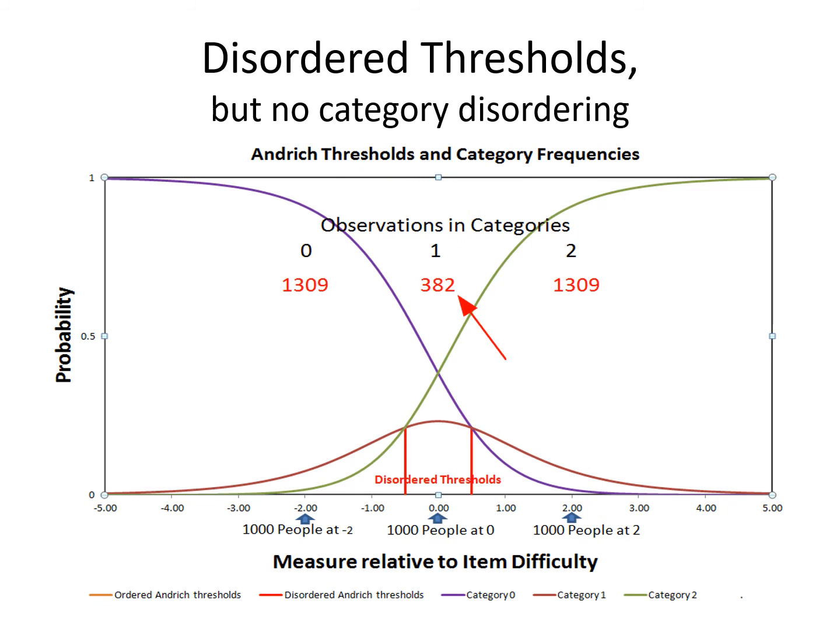Now the Andridge thresholds are reversed — what's called disordered thresholds. The number of observations in the central category has dropped yet again, now down to 382, and in the other two categories has increased. Notice that the number of people at each point on the latent variable has not changed. All that's changed is the width of the central category, which we could say is the discrimination of the central category, or how big it is on the latent variable.